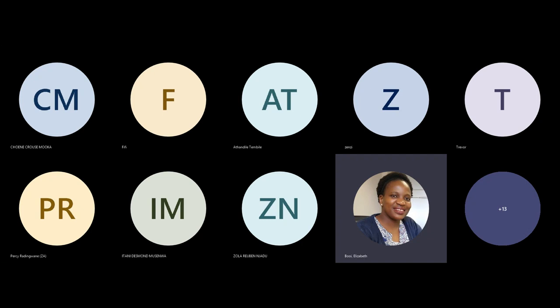We also speak about the levels of measurements. You need to know each and every section in study unit one with regards to those concepts. When we talk about the types of measurements or levels, you need to know the order in which they happen — which one is the lowest and which one is the highest order. Then in study unit two, we talk about how to visualize the categorical or the numerical. Categorical are those that you put into categories — qualitative variables — and numerical, which are quantitative, which we can measure or count.